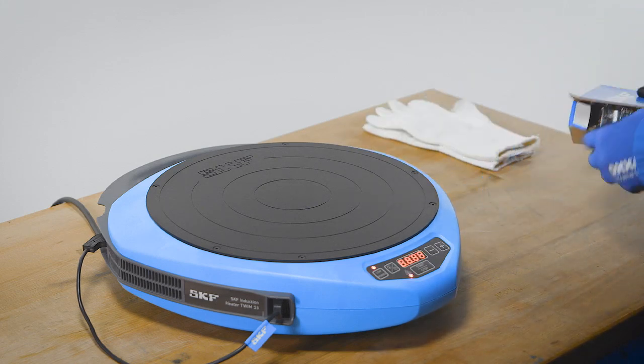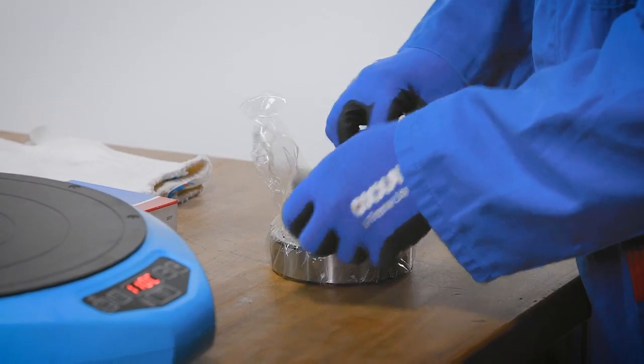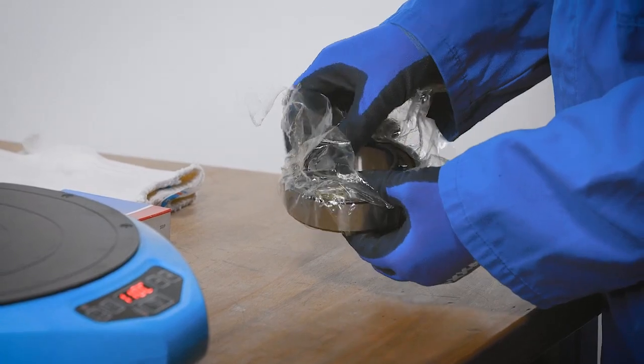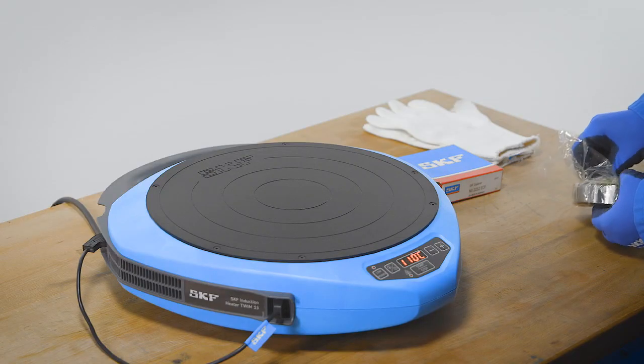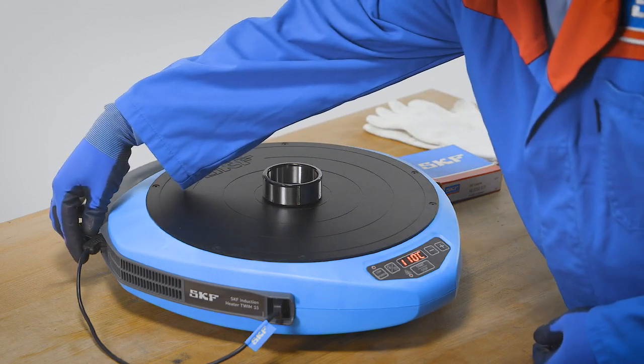Cylindrical roller bearings are often fitted using heat to expand the bearing inner ring. SKF provides a wide range of bearing induction heaters for this purpose. In this instance, a small induction heater is used.